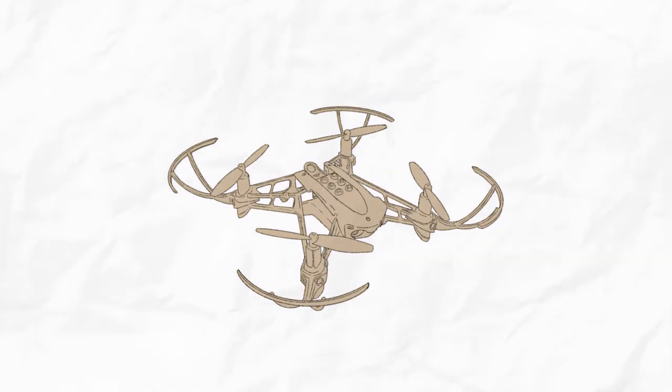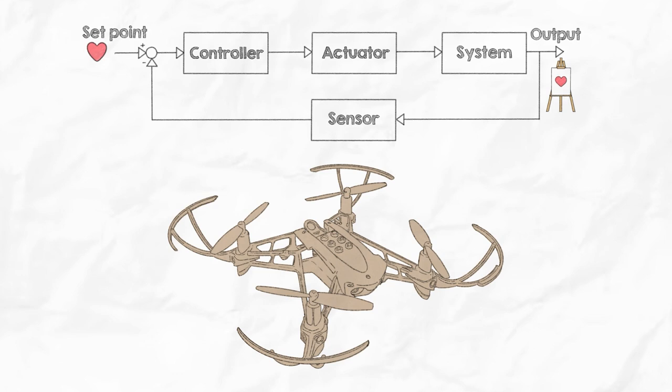To better understand, we'll focus on one single drone. Let's go back to Leonardo on our block diagram. The system is now a drone, but what about the actuator, the controller, the sensor?